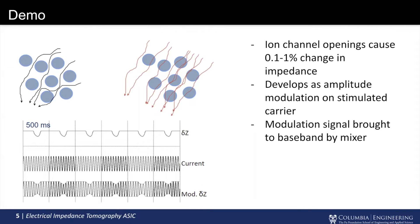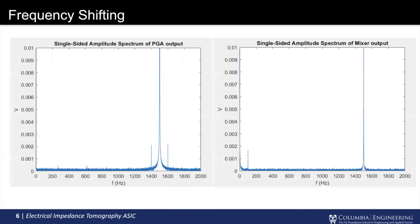So when we record, there are resistivity changes from around 0.1 to 1% change, resulting from those ion channels opening and closing. And so that amplitude-modulated wave is finally brought down to baseband by the mixer on each channel. And so here we can see the effects of that mixing. So on the left is the output of the PGA, where you can see the 1.5 kHz carrier that has undergone some amplitude modulation at 100 Hz, which spreads the frequency distribution to 1400 and 1600 Hz. But then after it passes through the mixer, those components are brought down to 100 Hz.